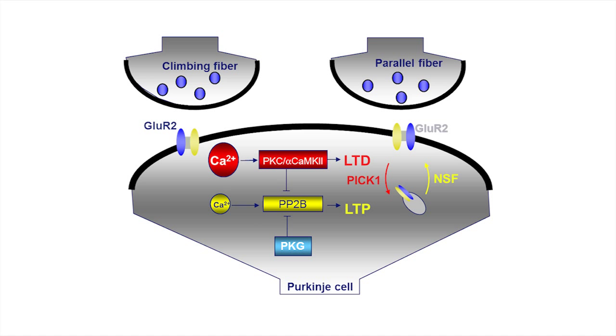So we created the mouse model in which PP2B is blocked specifically inside the Purkinje cell and we named this mouse L7-PP2B.